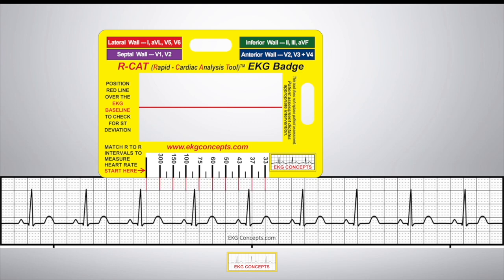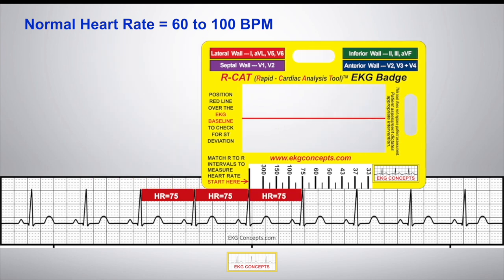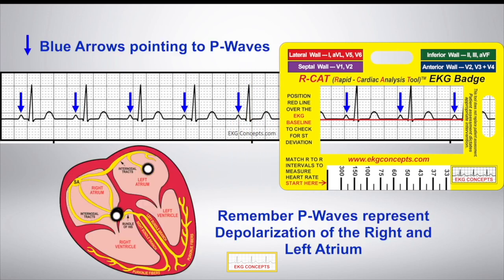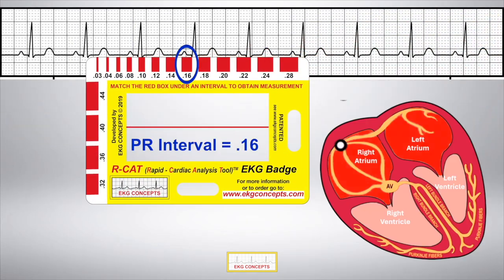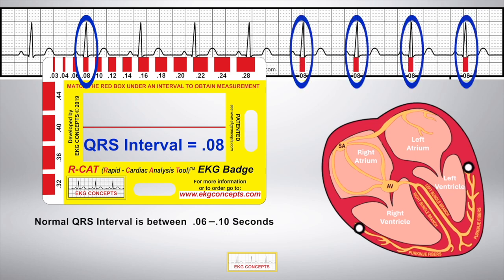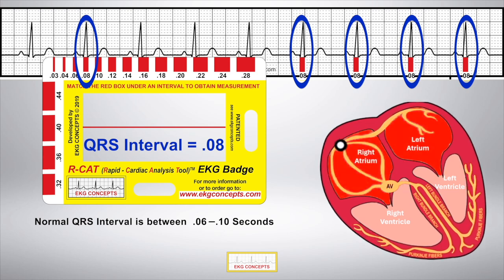Use the calibrated EKG badge to measure the heart rate on top of the QRS intervals. The heart rate is consistently 75 and regular, within the normal limits of 60 to 100. Slide the red baseline on the EKG and you can see a P wave before each QRS. The time for the impulse originating in the atria to travel to the ventricles — also called the PR interval — should be between 0.12 to 0.20 seconds. Here the time is 0.16 seconds, within normal limits. The time the impulse travels through the ventricles, represented by the QRS, should be between 0.06 to 0.10 seconds. Here the time is 0.08 seconds, within normal limits.